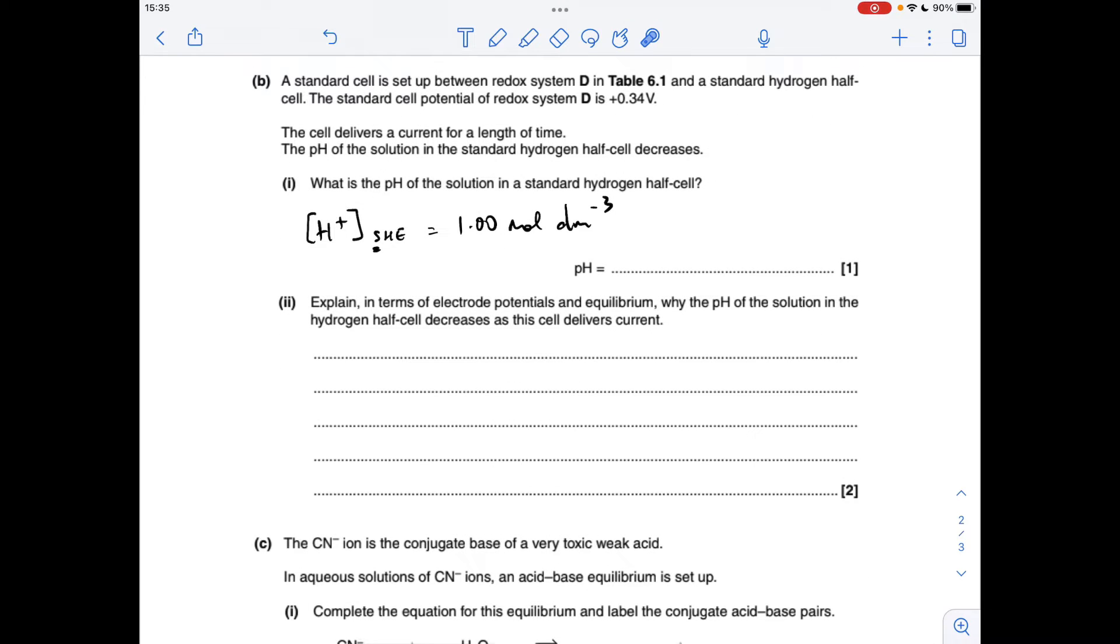pH of the solution in the standard hydrogen half cell. So the H plus concentration in a standard hydrogen electrode is 1 mol per decimeter cubed, so we just minus log 1, and we get a pH of 0.